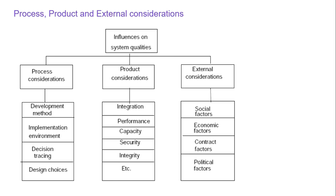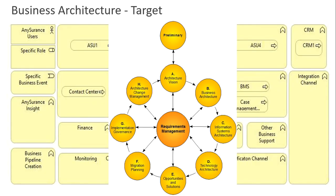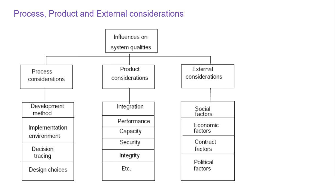While implementing the target architecture following certain architectural patterns, we are not going deep into TOGAF or any other framework because our objective here is non-functional requirements. These non-functional requirements can be classified into process considerations, product considerations, or external considerations. You need to remember these influencers on system qualities — any process, product, or external consideration must be kept in mind when addressing and writing non-functional requirements.